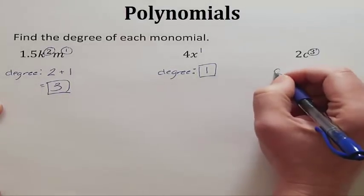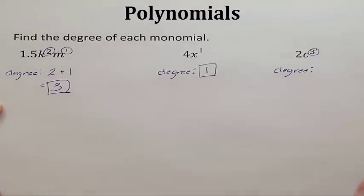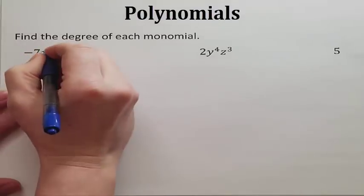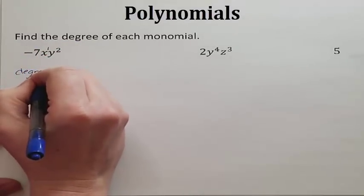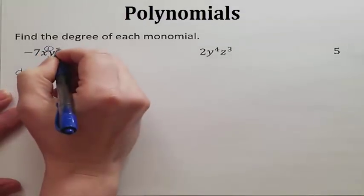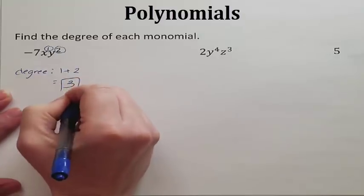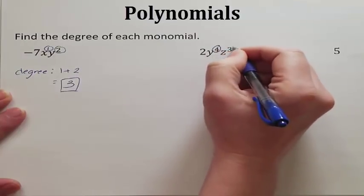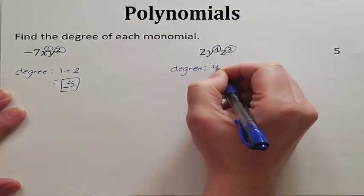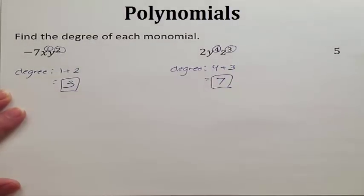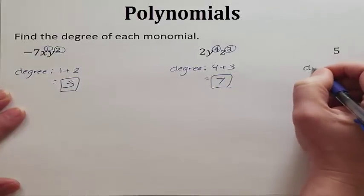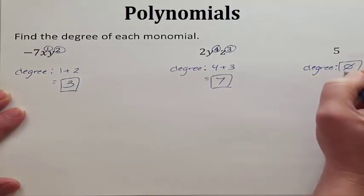The next monomial has a variable with exponent 3 and nothing else to add to, so its degree is 3. For the next practice problem, the variable x has an exponent of 1 (if not shown, it's 1), and the other variable has exponent 2, so the degree is 1 plus 2, which is 3. Then 4 plus 3 equals 7, so that monomial has degree 7. If there is no variable, it's a constant and has degree 0.